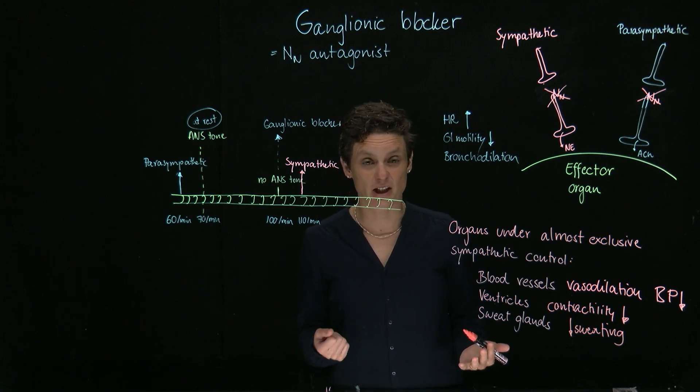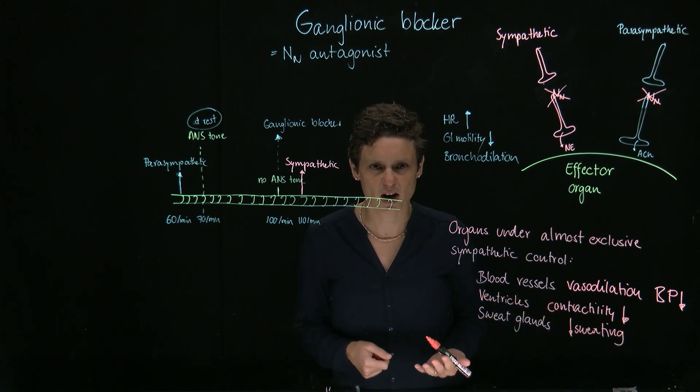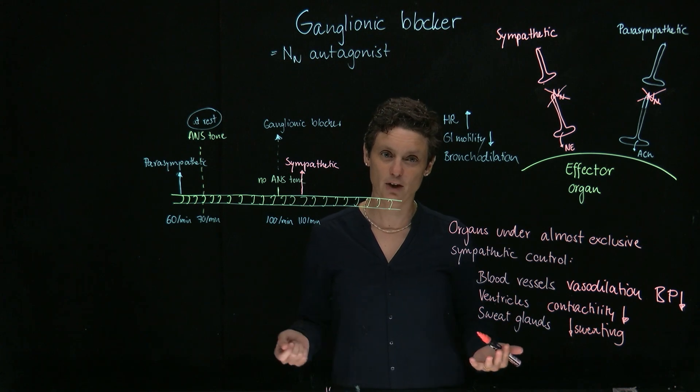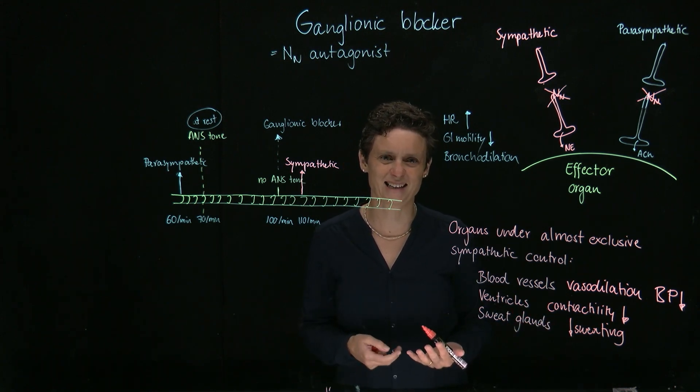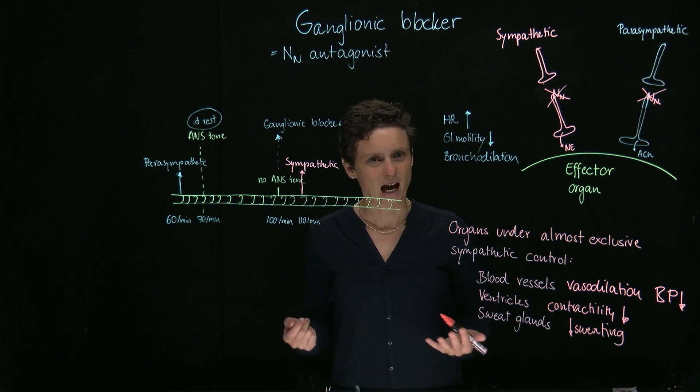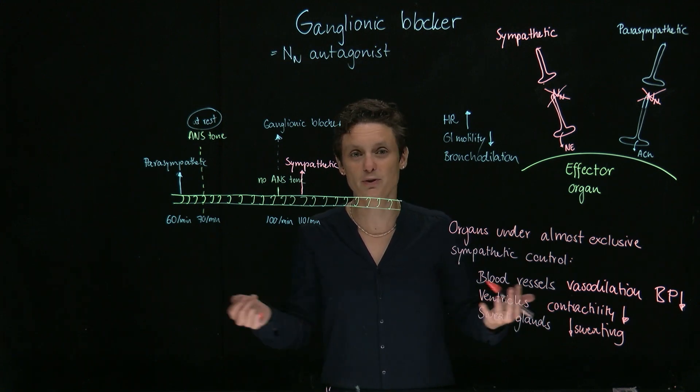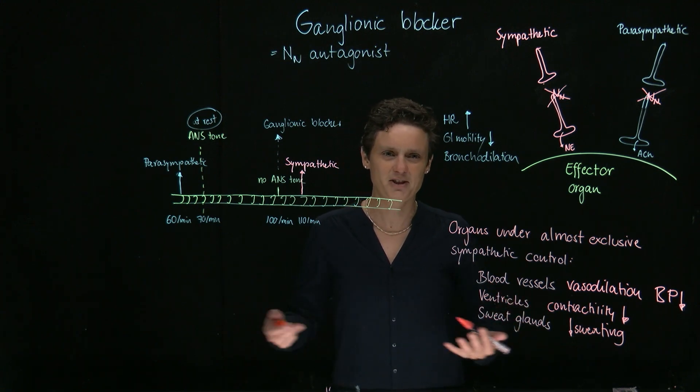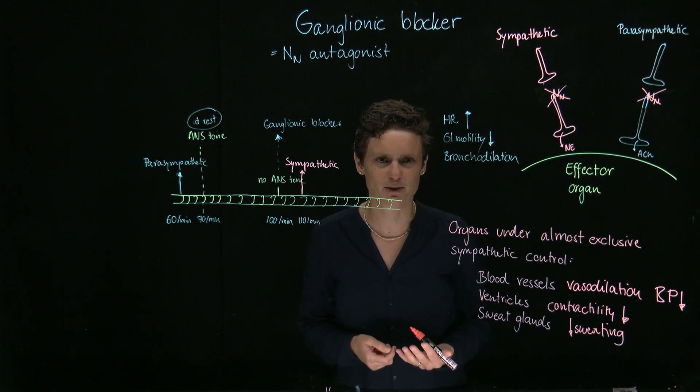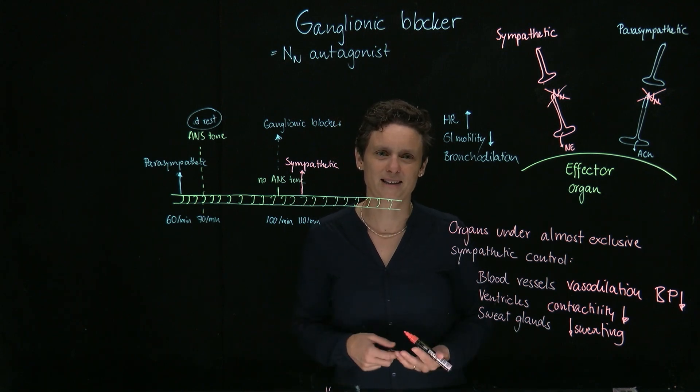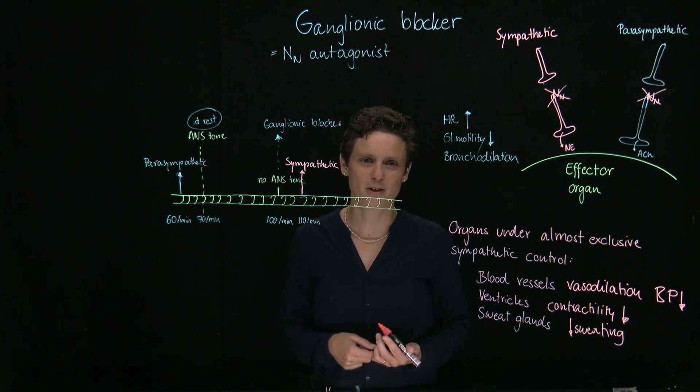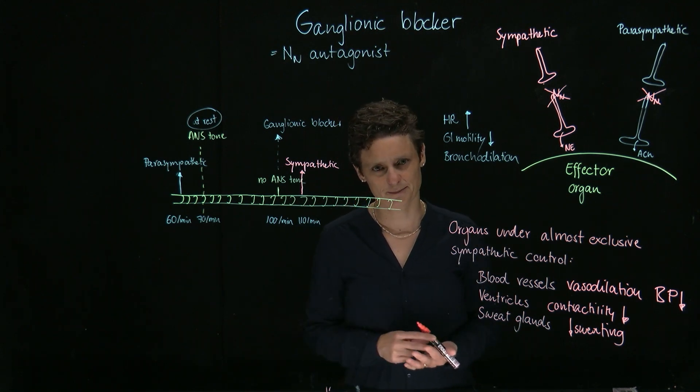And you can already imagine that these are not good drugs. They're also not used anymore. They're very old drugs. But why we still teach them and why they always get tested is because if you understand what ganglionic blockers do to all these effector organs, you actually understand a lot about autonomic nervous system physiology. And that's the reason why we still teach them. This concludes the video on ganglionic blockers, and I'll see you in the next one.